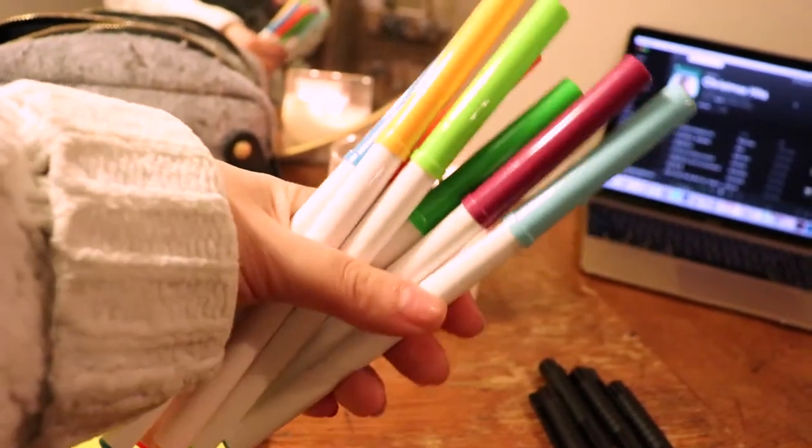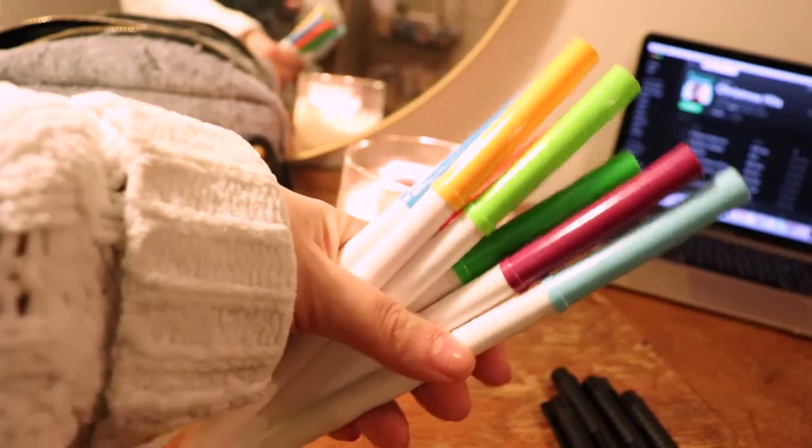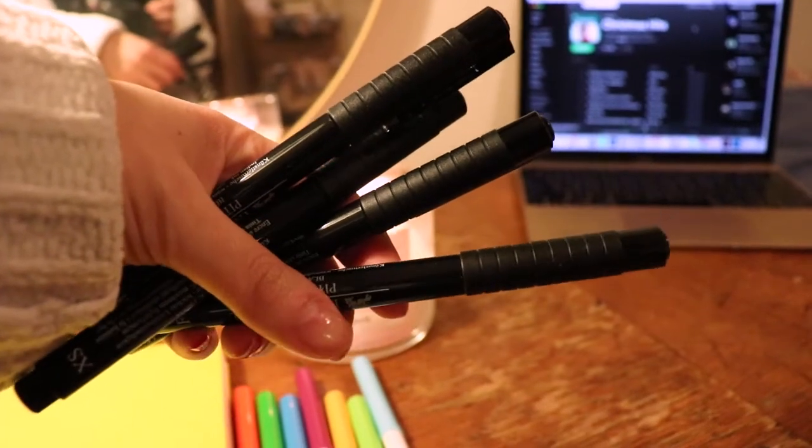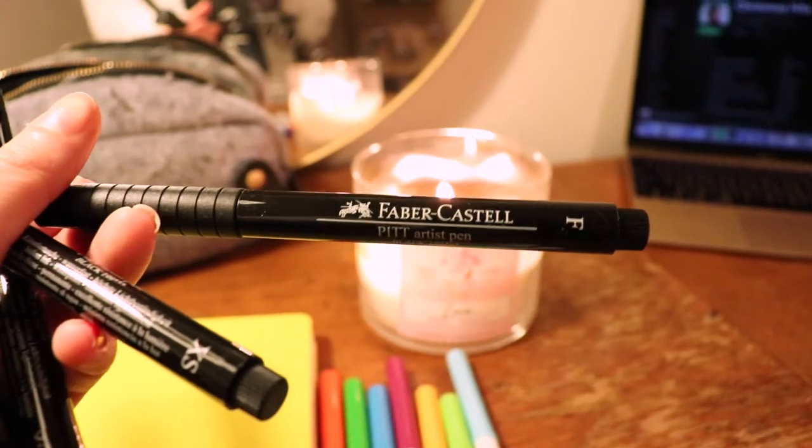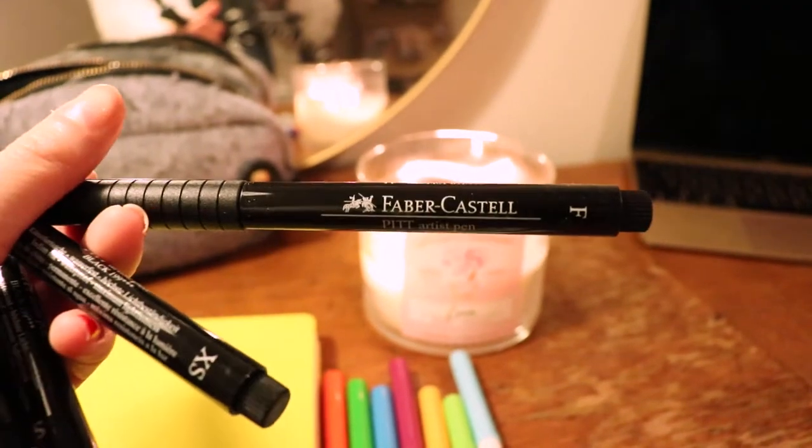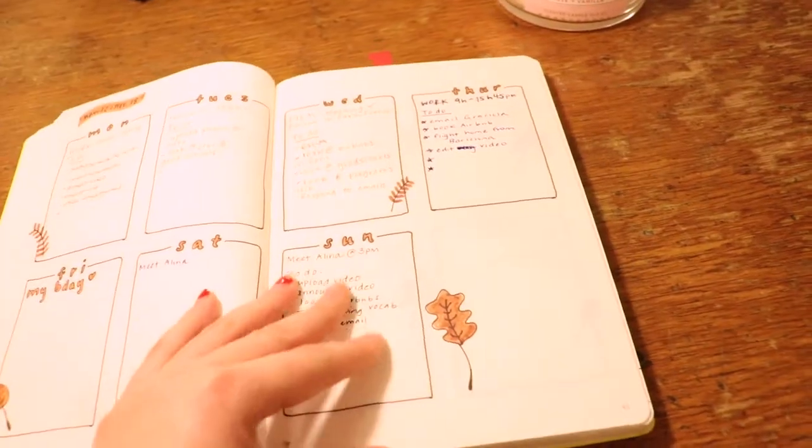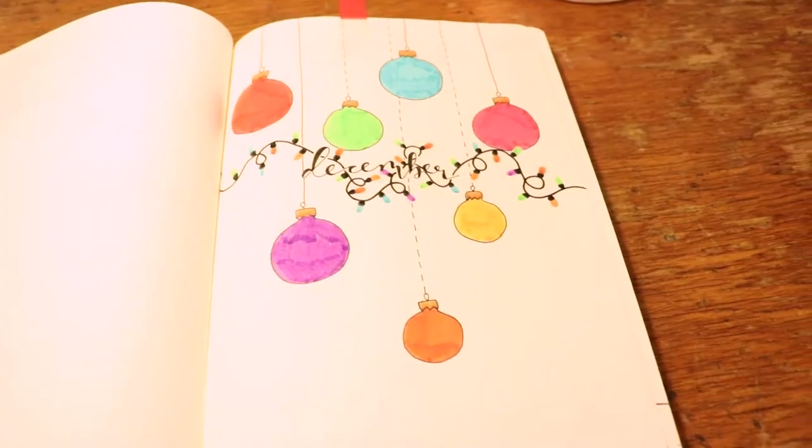In terms of supplies, let me tell you, I'm in love with my Crayola Super Tips. They're amazing. I used a bunch of colors and I'm also using my favorite Faber-Castell pens. And of course my bullet journal, my Leuchtturm 1917 dotted bullet journal.